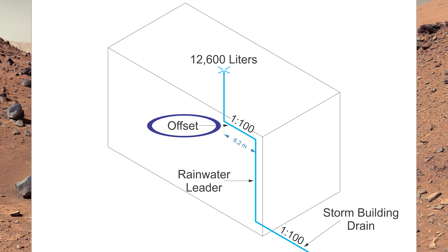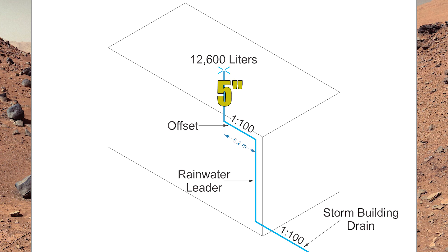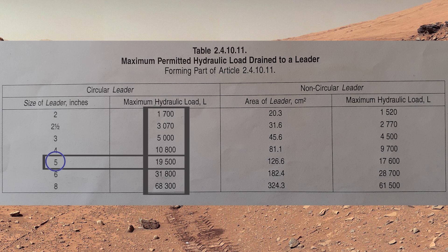So we need to size this section as a storm building drain. This is a 15 meter by 30 meter roof with a liter load of 12,600 liters of rainfall going through the roof drain. That first section of rainwater leader before it gets to the offset can still be five inches in size. We can tell that by looking at table 241011 — going across at 19,500, it says we can be five inch.